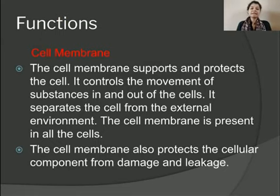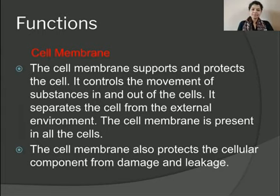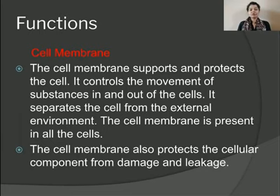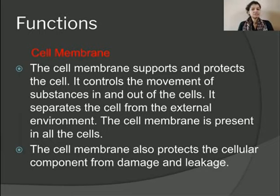The first part is the cell membrane. The cell membrane supports and protects the cell and controls the movement of substances in and out of the cell. It also separates the cell from the external environment. The cell membrane is present in all cells, including plant cells as well as animal cells. It is basically the outermost covering of the cell within which all other organelles such as the cytoplasm and the nucleus are enclosed.